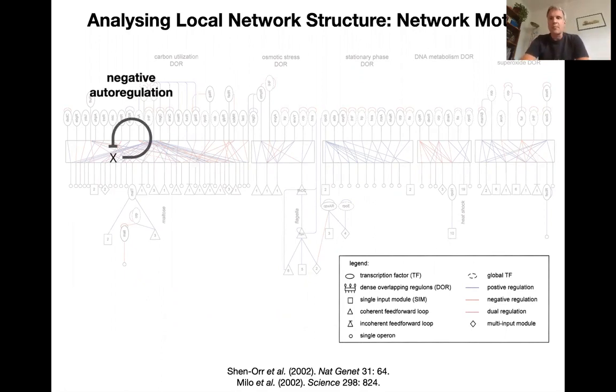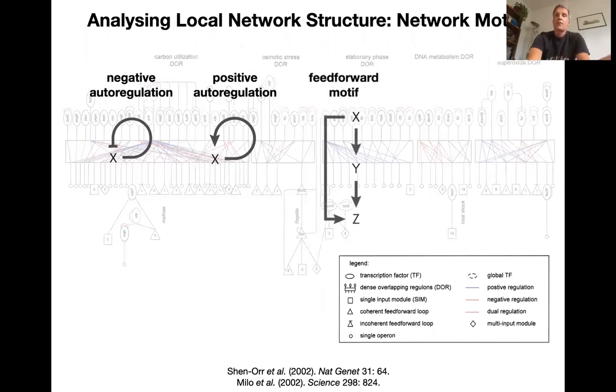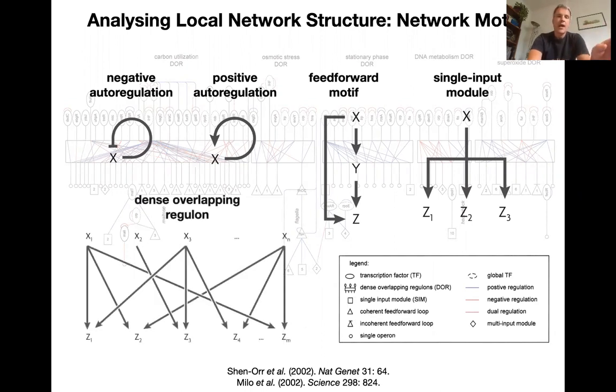And so then on these signed directed graphs, you can identify a whole range of different motives. A bunch of classical examples are shown here. So you could have negative auto regulation. This can be direct or it can go through intermediate steps, by the way, which are not shown here. Positive auto regulation. So this is auto activation. Negative auto regulation is auto inhibition. The feed forward motive, of course, they identified what they called single input modules where one transcription factor was responsible for a whole range of targets. Maybe with different sensitivities. And then what they call these dense overlapping regulons that allowed them to partition the transcriptional network of E. coli into these big chunks where there's a shared set of transcription factor that regulates an overlapping set of targets.